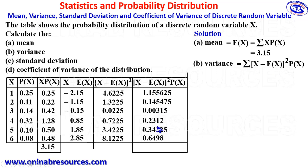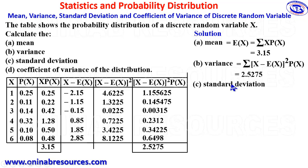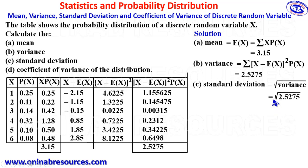We sum up this last column to get our variance. Putting this in our calculator, we have 2.5275, which is the variance of the probability distribution. The next thing is standard deviation, which is the square root of the variance. Therefore, standard deviation equals the square root of 2.5275, which gives 1.5898.